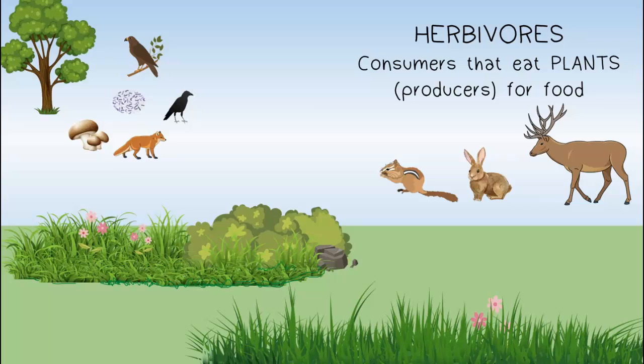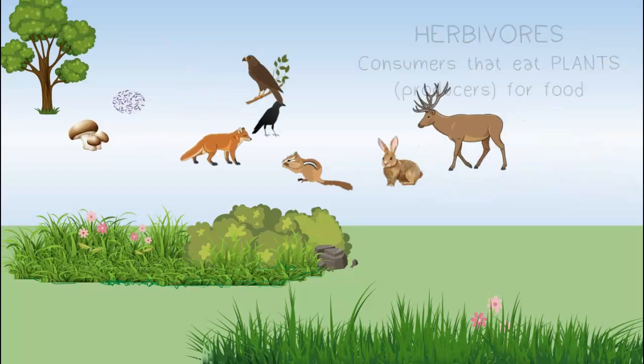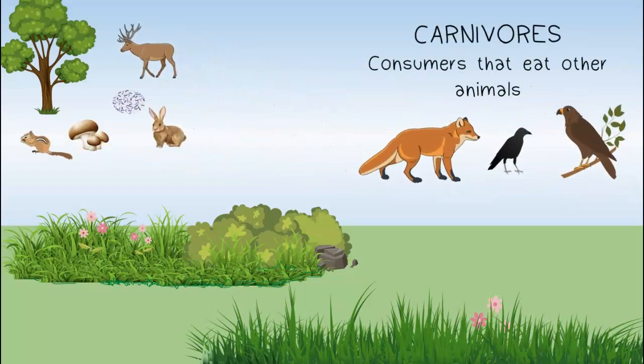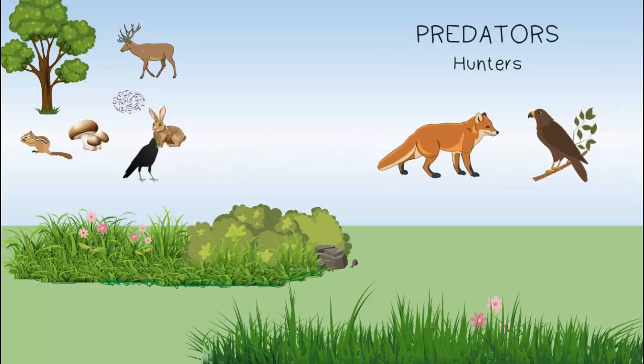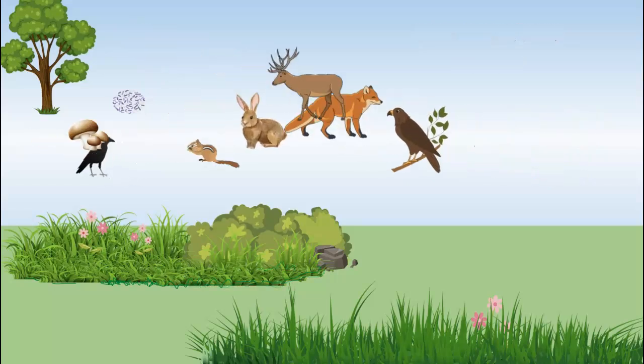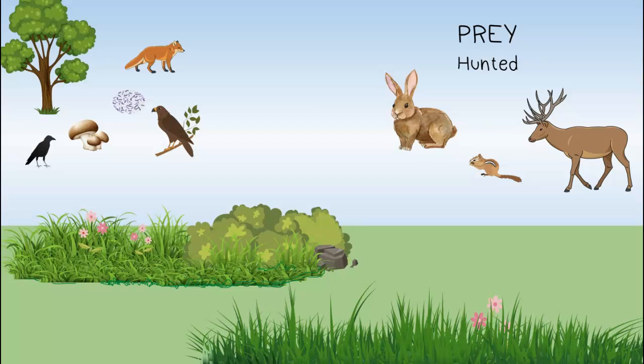An herbivore is a consumer that eats plants or producers for food. A carnivore is a consumer that eats other animals. Carnivores are also classified as predators because they are hunters, and most herbivore species are classified as prey — these are the species that get hunted by carnivores.